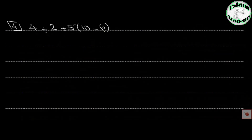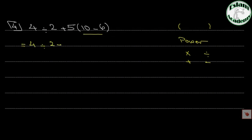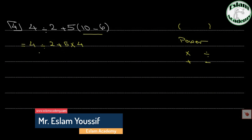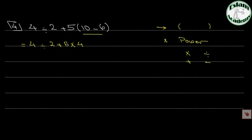Number 4: 4 divided by 2 plus 5 times (10 minus 6). We solve the bracket first: 10 minus 6 equals 4. Then we have division, addition, and multiplication. No power, so we solve multiplication and division from left to right. 4 divided by 2 equals 2, plus 5 times 4. Multiplication comes first: 5 times 4 equals 20. Then 2 plus 20 equals 22.